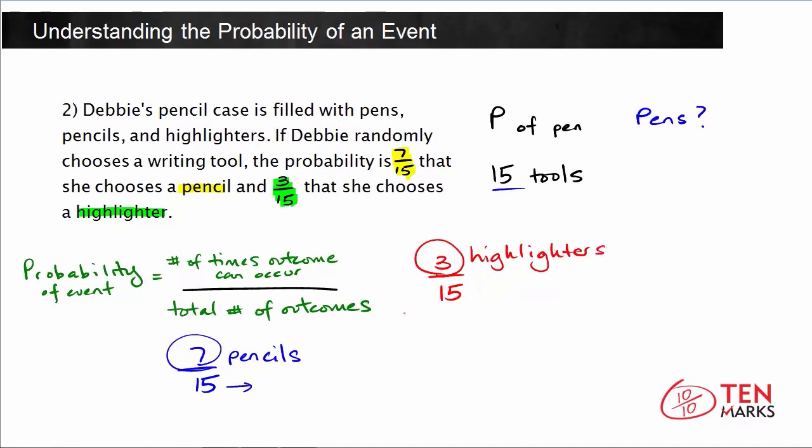Now we can find the number of pens because we have 7 plus 3, that's pencils plus highlighters equals 10. And there are 15 in all, 15 in all minus the 10 we've already accounted for, leaves us with 5 writing tools in the pencil case. So that means there must be 5 pens in there.